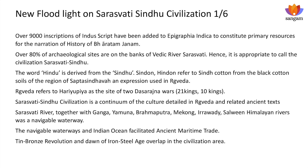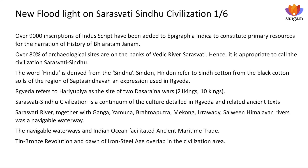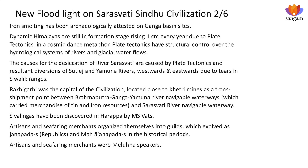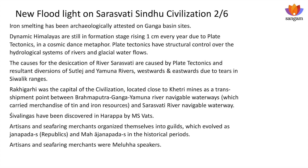The Saraswati river, together with the Ganga, Yamuna, Brahmaputra, Mekong, Irrawaddy, and Salween — all Himalayan rivers — was a navigable waterway. These navigable waterways complemented the Indian Ocean, which was a critical navigable waterway for ancient maritime trade. The waterways of the great Himalayan rivers and the Indian Ocean constituted the structural framework for ancient maritime trade, recorded in these 9,000 inscriptions. Tin bronze evolution and the dawn of the iron-steel age overlap in the civilizational area. Iron smelting has been archaeologically attested on the Ganga Basin sites — Malhar, Rajanalkitila, and Lohar Diva.